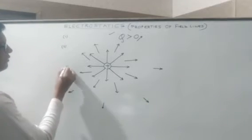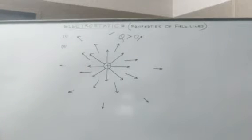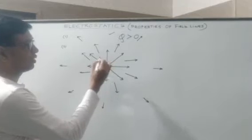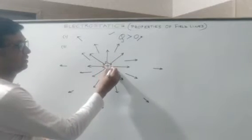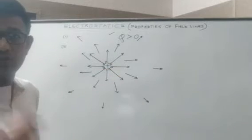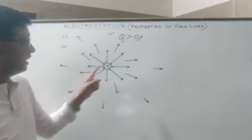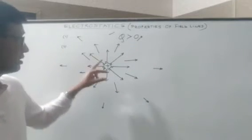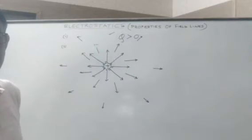One more thing: the field lines while emanating from the charged body always make an angle of 90 degrees with it. From this diagram two properties are confirmed: field lines emanate from the positive charge, and since it is a single isolated charge the field lines are straight.